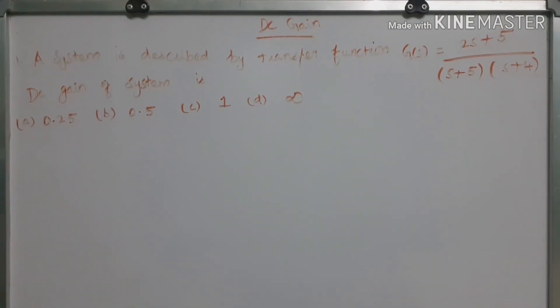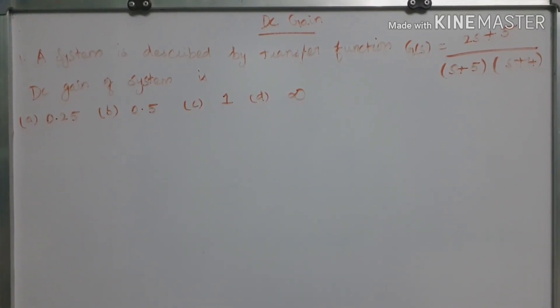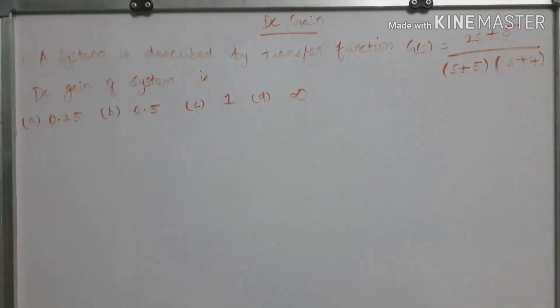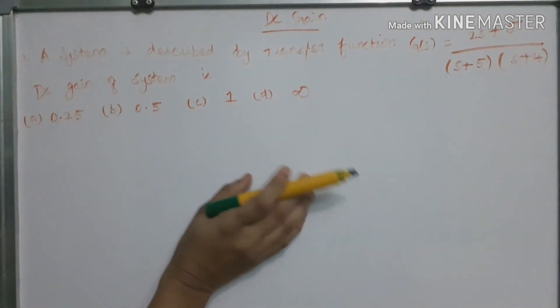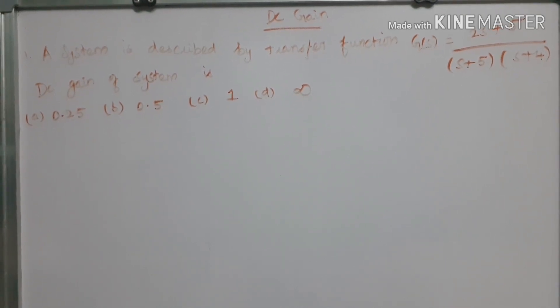Next important topic of a control system is DC gain of the system. A system is described. First, let us consider this example. A system is described by a transfer function g of s is equal to 2s plus 5 by s plus 5 into s plus 4.